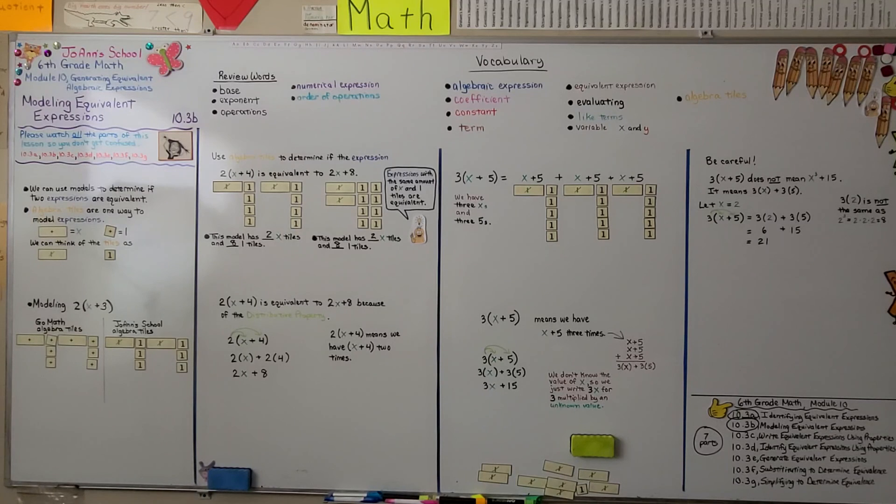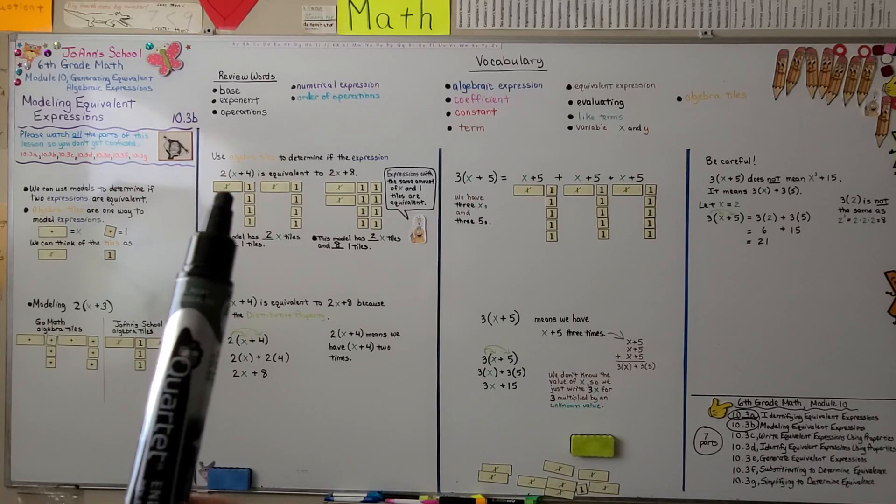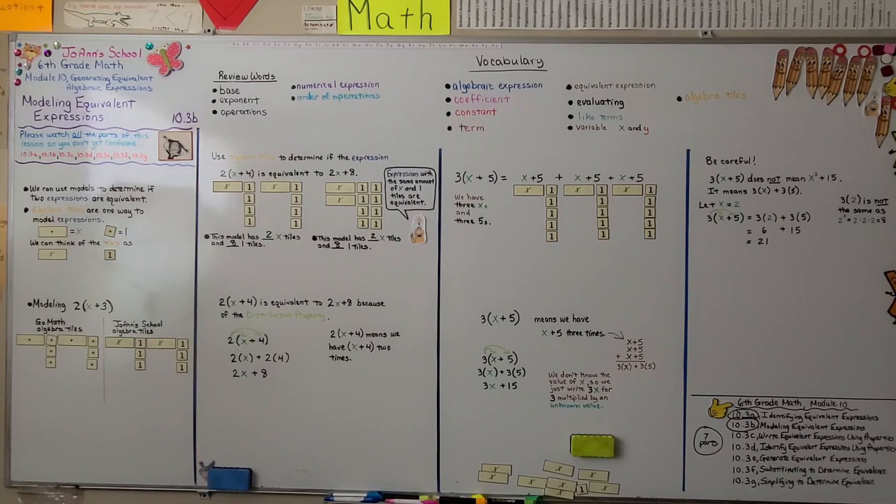If you'd like, you could try to make your own algebra tiles. You can make them like the GoMath ones with the plus sign in the square and the rectangle, or you can make them like mine with an x for the variable in the rectangle and ones in the squares.